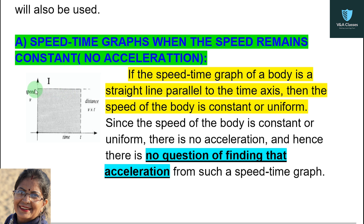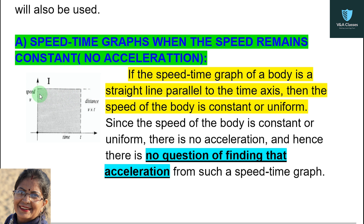Since the speed of the body is constant or uniform, there is no acceleration, and hence there is no question of finding acceleration from such a speed-time graph. So if the speed-time graph is parallel to the time axis, it means the speed of the object is constant or uniform. And if the speed is constant, then there is no acceleration, so we cannot find the acceleration value from this graph.